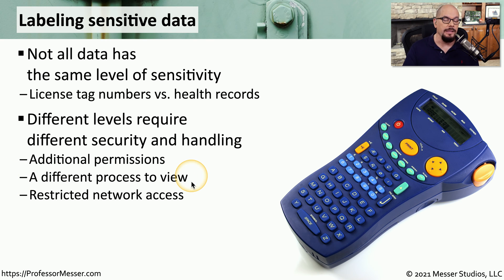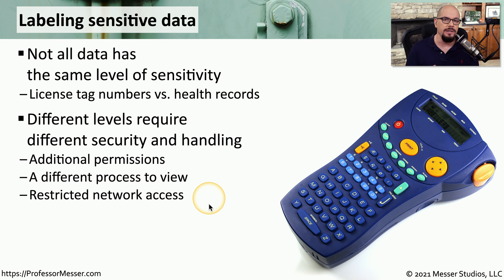There may also be a completely different process to view this different type of information. The local government motor vehicle department can probably search through all of the license tag numbers, but they would not have access to all of your medical information. In the case of medical records or financial information, there may be a completely different set of security controls. It may be on a separate network, we may have other firewalls, that data may be encrypted, and we may be applying a completely different set of security policies to your health care information than what we apply to your license tag number.